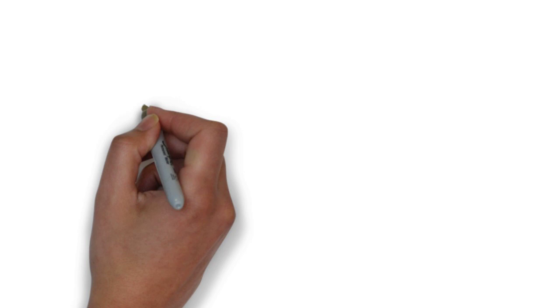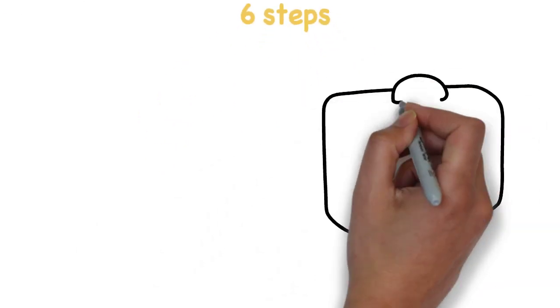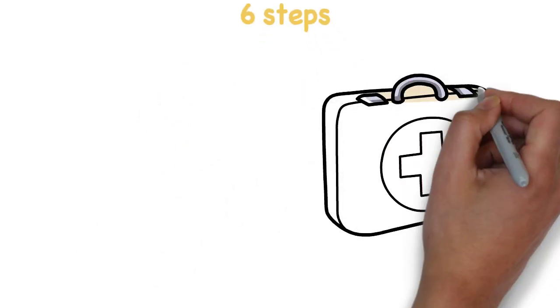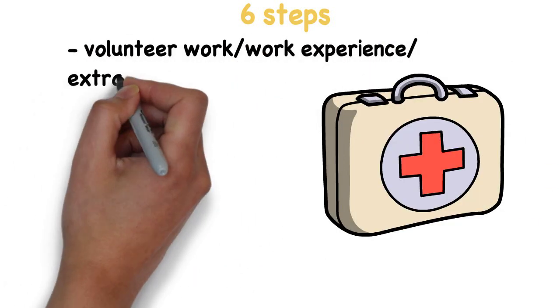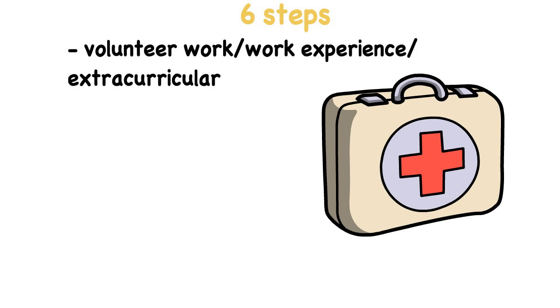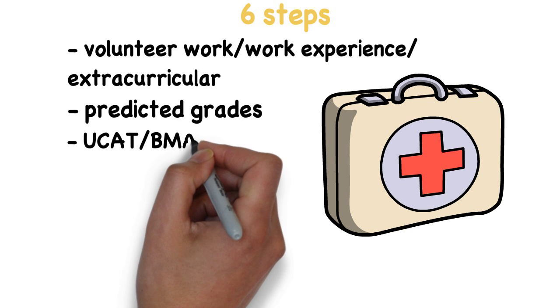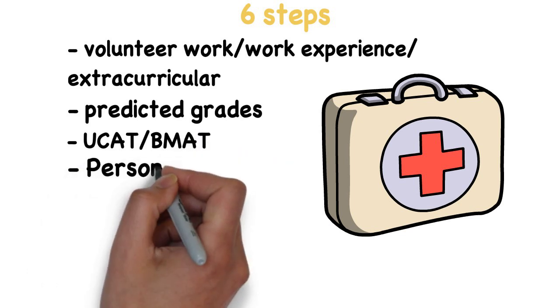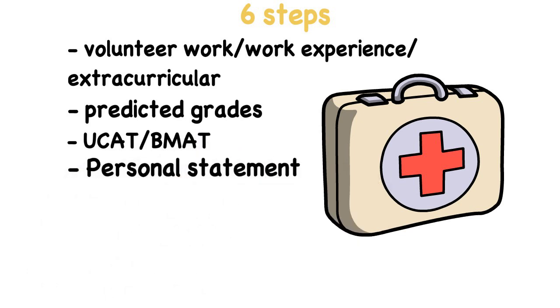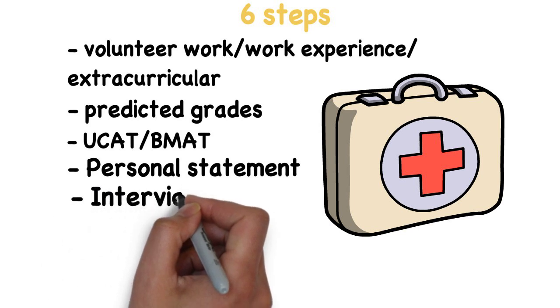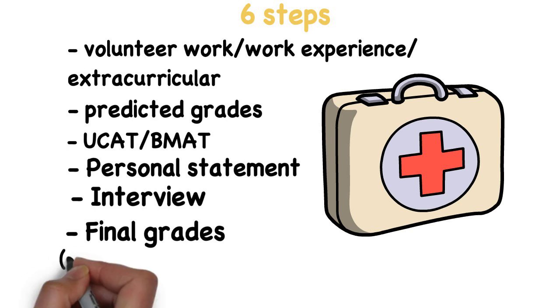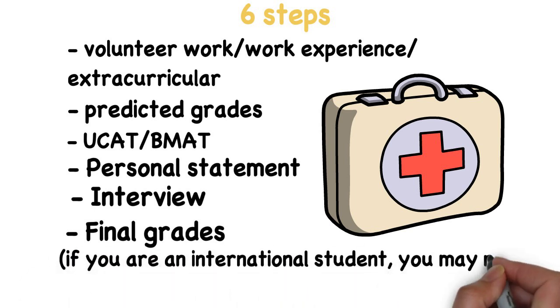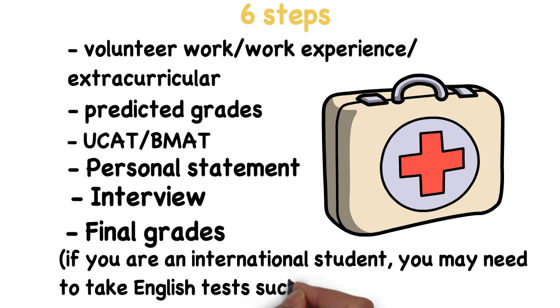So, for this video, we have divided the medical application process into six basic steps. The first one is volunteer work, work experience, and extracurricular activities. The second one is predicted grades. The third is the UCAT or the BMAT score. The next one is the personal statement, followed by the interview, and at last your final grades. Also, keep in mind that if you are an international student, you might be required to take English tests, such as IELTS.